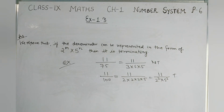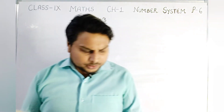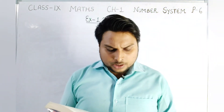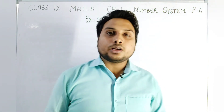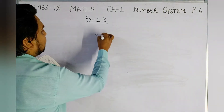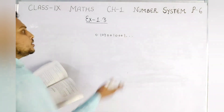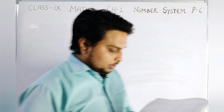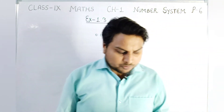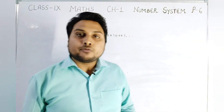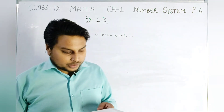Question 7: Write 3 numbers whose decimal expansions are non-terminating non-recurring. For example: 0.10100100010000... and so on. Write two more such numbers. Question 8: Find 3 different irrational numbers between 5/7 and 9/11. Find their approximate decimal values and then write irrational numbers between them.